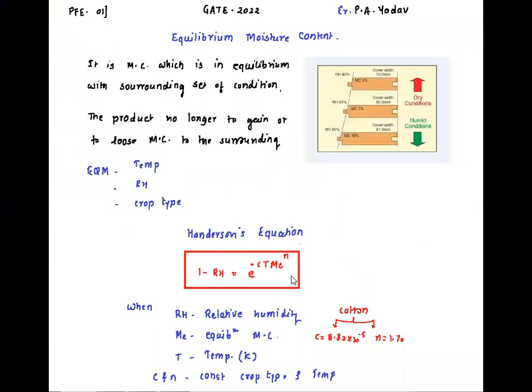Equilibrium moisture content is the moisture content at which your surrounding and product moisture content will be matched. That means your product no longer accepts moisture and no longer loses moisture — it is in the saturated equilibrium condition. That is why it is called equilibrium moisture content.